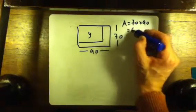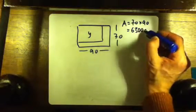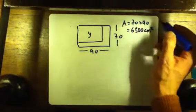Seven nines are 63. Add on the two zeros. 6300 centimeters squared.